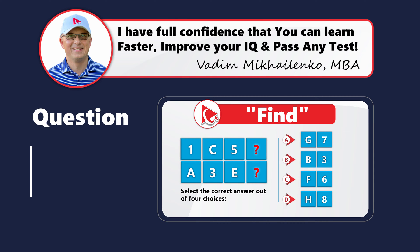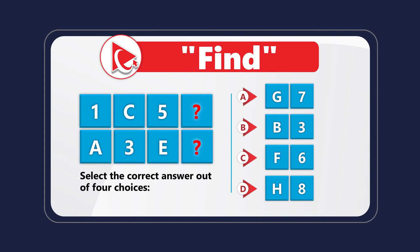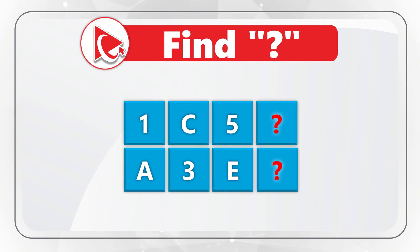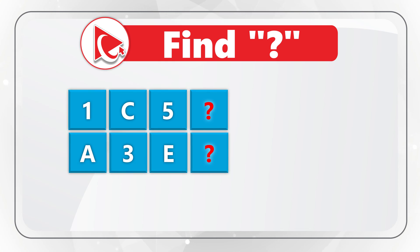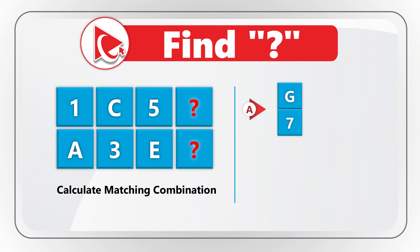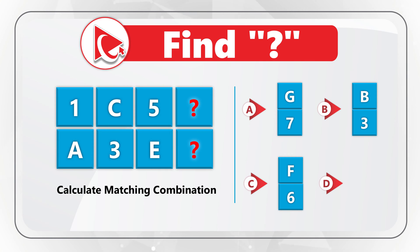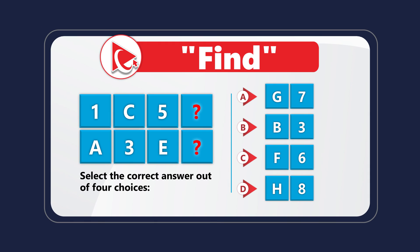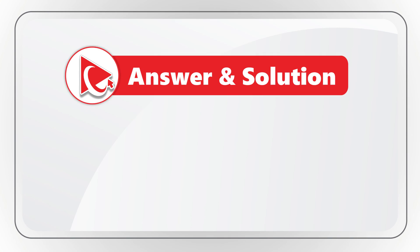Calculating missing items is one of my favorite question types. You are presented with two rows of values. The first row contains values 1, C, 5, and then the missing value. The second row contains values A, 3, E, and then the missing value. You need to select the calculated combination from four choices: A=G7, B=B3, C=F6, D=H8. I believe the correct answer here is choice A, G7.